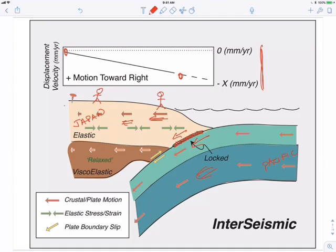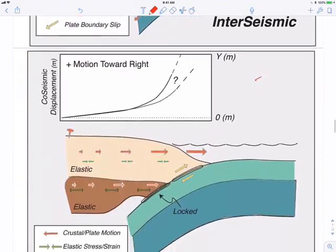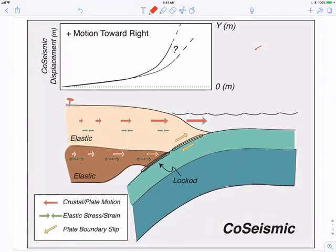But now during an earthquake, this region here that is locked and coupled between earthquakes will be uncoupled, will be broken. And this whole region here will be allowed to rebound, what we call the elastic rebound theory, and will be allowed to rebound back.